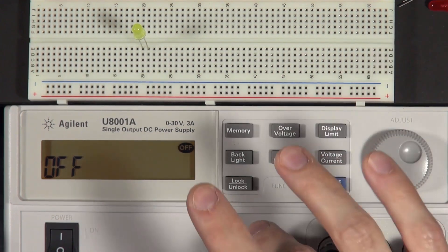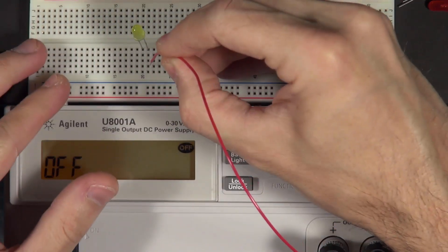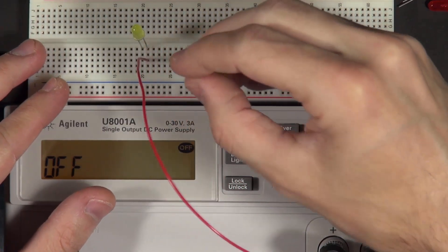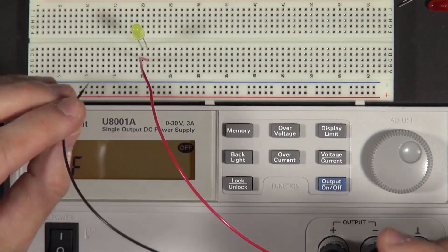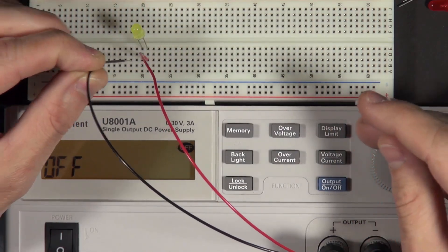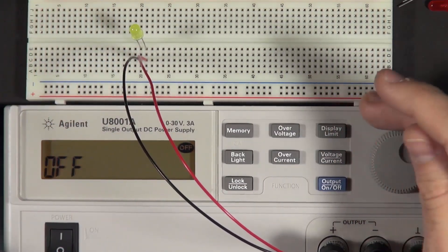So what we can do is we can hook up our power source. So we have the positive side of the power source, which will hook to the right side of the LED, which again was that longer lead. And then the left side of the LED, which is the shorter lead, will hook to the negative side of the power source. And of course the power source is off, so nothing happens.